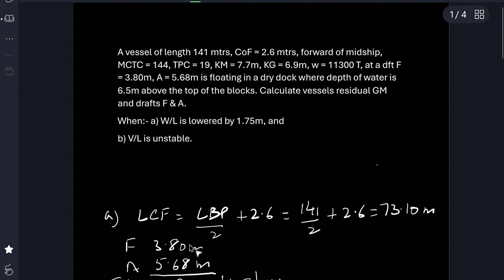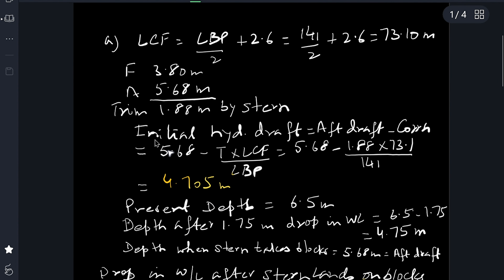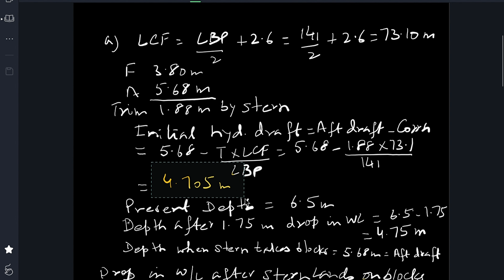Draft forward is 3.8 and aft is 5.68, trim 1.88 meters by stern. So what's the initial hydrostatic draft? We apply correction to aft draft: aft draft is 5.68, correction applied will be trim into LCF upon LBP. Trim is 1.88 meters, LCF 73.1 and LBP 141. So we get initial hydrostatic draft as 4.705 meters.